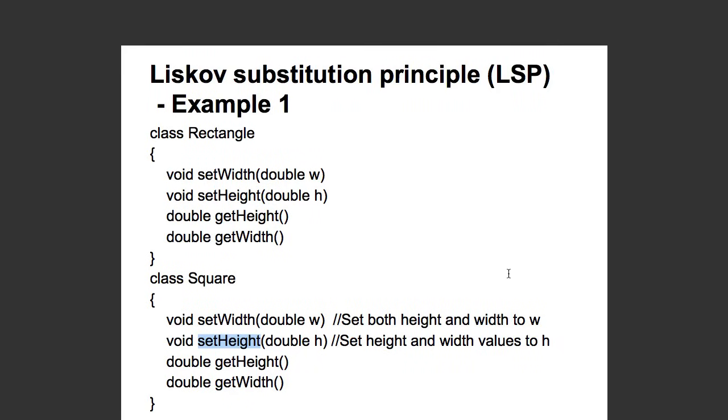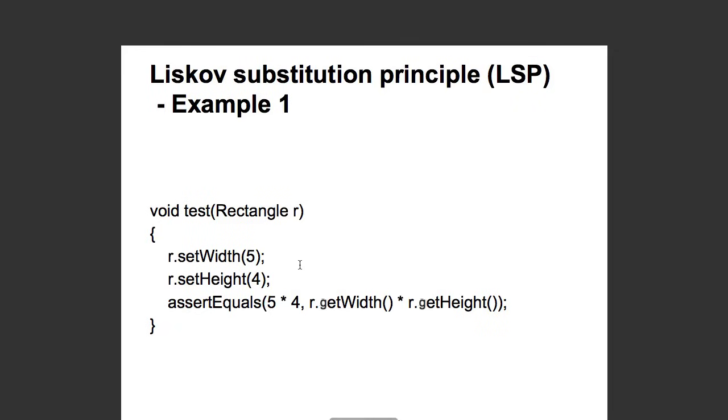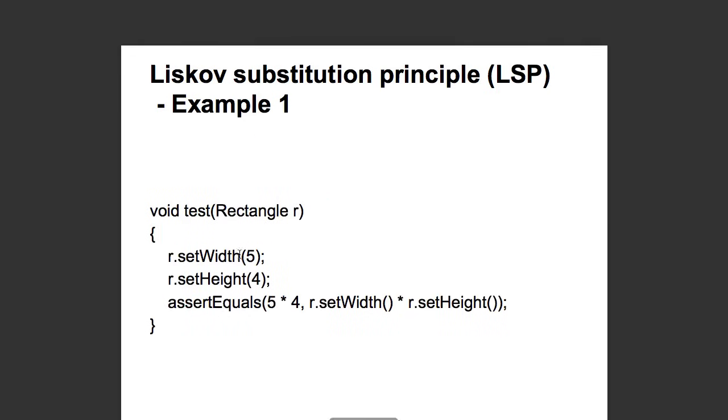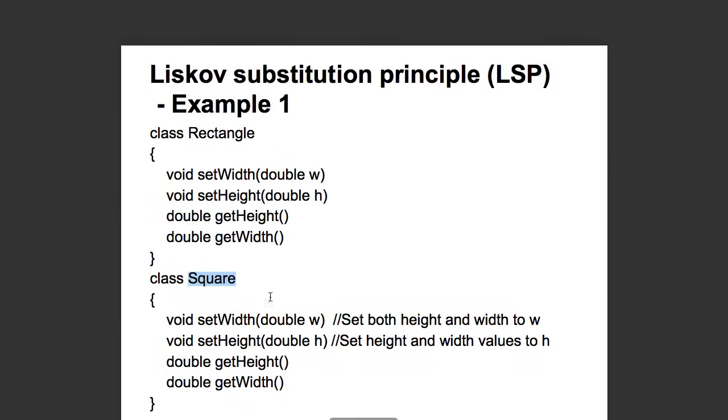Is that a good implementation? Liskov Substitution Principle says it's a bad implementation. Consider a piece of code like this. If somebody wants to test a rectangle, let's say this is the method which is written: r.setWidth(5), setHeight(4) and he's checking if the area is 5 into 4. Will the square class pass this test? The answer is no, because your setHeight is actually setting both height and width to the same value as h.